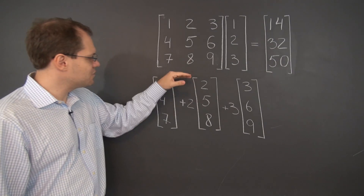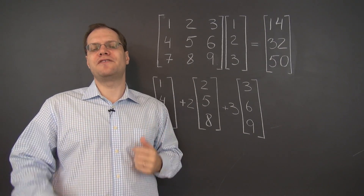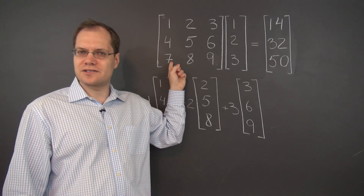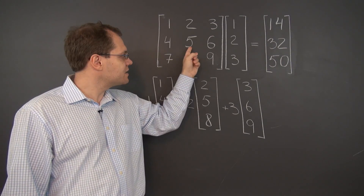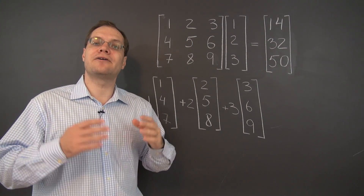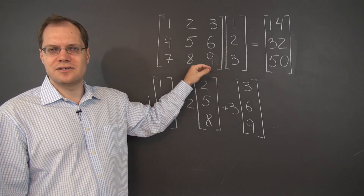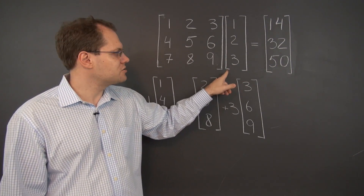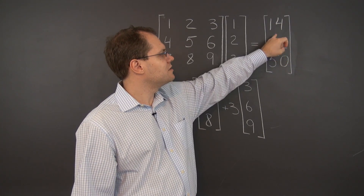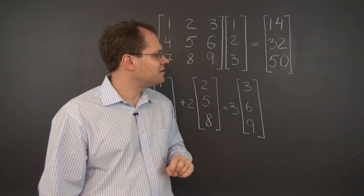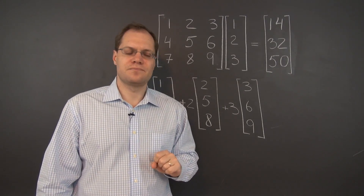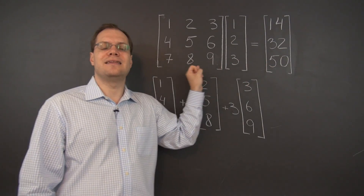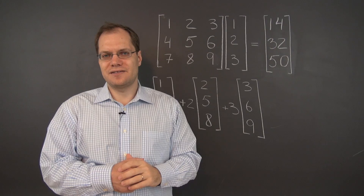Let's verify this. We've encountered this matrix several times before and are familiar with its column space: it's characterized by the middle entry being the average of the first and third entries. So let's confirm that our result vector [14, 32, 50] is in this column space. Indeed it is, because 32 is the average of 14 and 50 — that's 64/2, correct. So the resulting column is always in the column space of the matrix on the left.